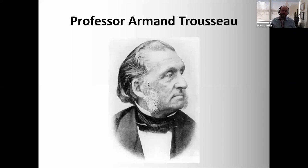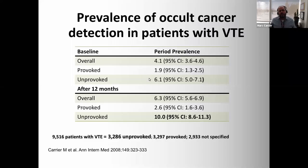Interestingly, if you read his memoir, Professor Trousseau actually had an upper extremity proximal deep vein thrombosis and died of stomach cancer a few months later. Not only did he describe the phenomenon, but he actually lived it — his venous thromboembolic disease led to an occult cancer detection. As clinicians, if we think there can be clinical signs that our patients have cancer, that's really appealing.